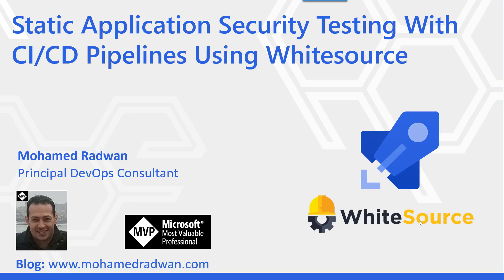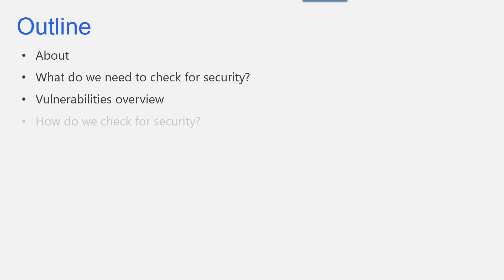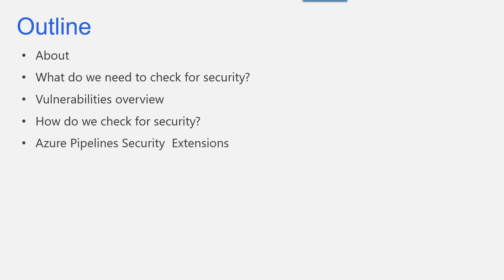Welcome to this video on static application security testing with CI/CD pipelines using WhiteSource. We will take an overview of how to check for security — specifically how to check for vulnerabilities in the source code or in libraries. Then we'll get an overview of the vulnerabilities database, and understand how to check for security using static security scans.